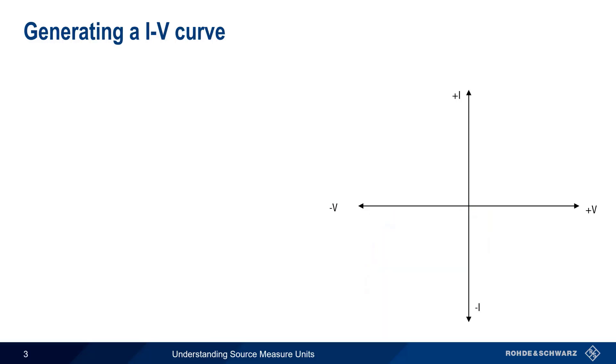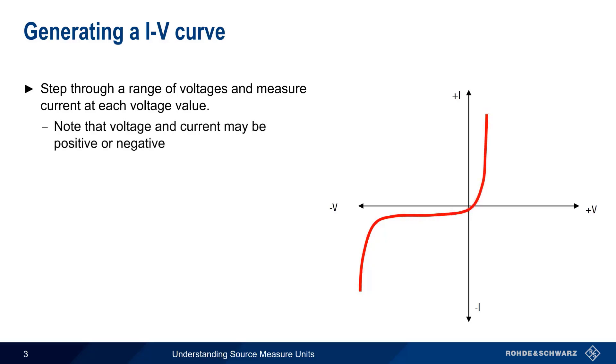So how would we generate or plot the IV curve for a diode? Since current is a function of voltage, we would need to step through a range of voltages, measuring the current for each voltage value, and then use these points to plot current versus voltage as a line.